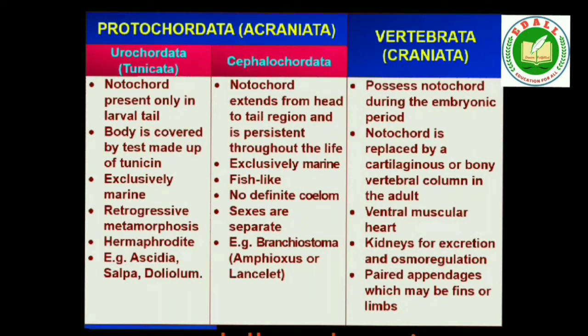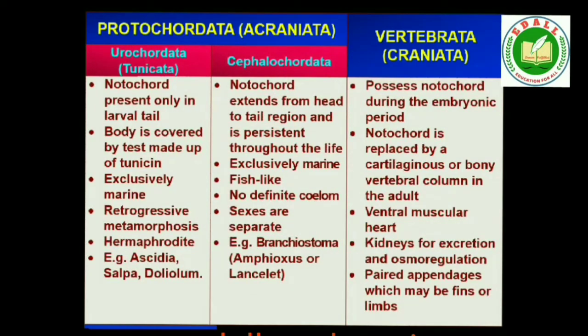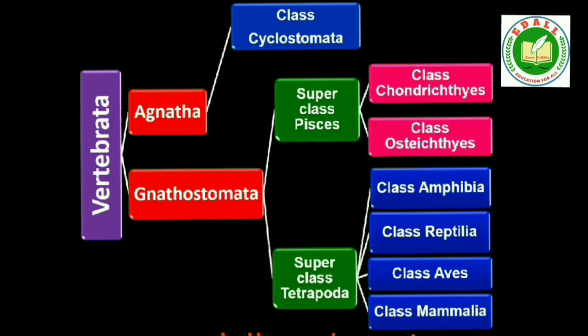Besides the basic chordate characters, vertebrates have a ventral muscular heart with two, three or four chambers, kidneys for excretion and osmoregulation, and paired appendages which may be fins or limbs. The subphylum Vertebrata is further divided into Agnatha (lacks jaws) and Gnathostomata (bears jaws). Agnatha is further divided into class Cyclostomata. Gnathostomata is divided into superclass Pisces (fins) and Tetrapoda (limbs). Pisces is divided into class Chondrichthyes and Osteichthyes. Tetrapoda is divided into class Amphibia, Reptilia, Aves and Mammalia.